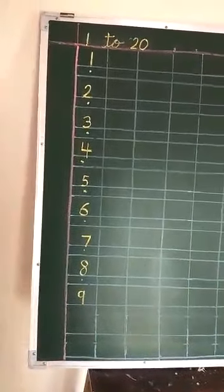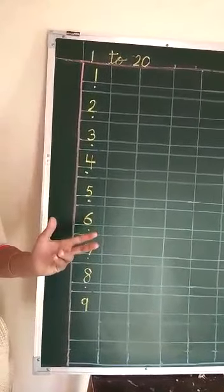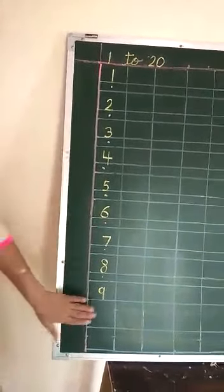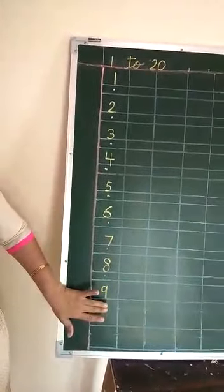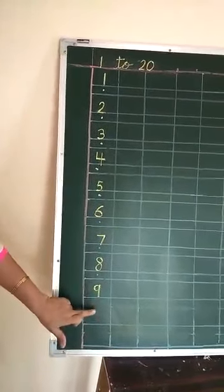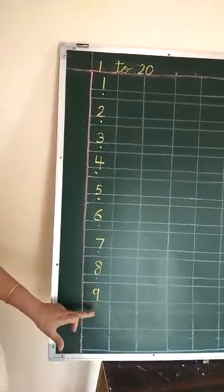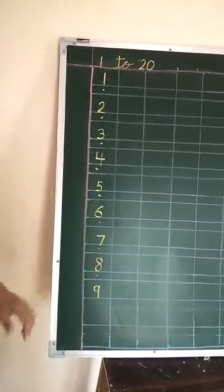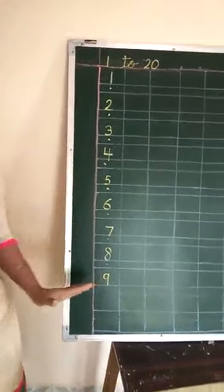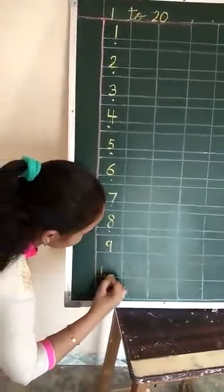Okay, children. After 8, which number comes? 9. Put 1 dot. Write down 9. Okay, children. After 9, which number comes? 10. But listen — here you don't have to leave a box. Directly after 9, you have to write 10. Write 10 directly in your notebook after 9.